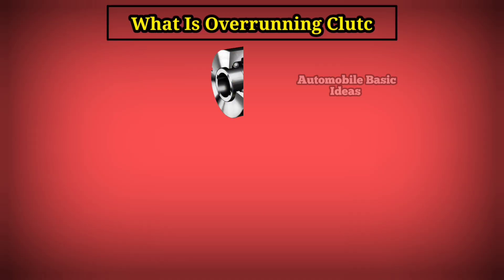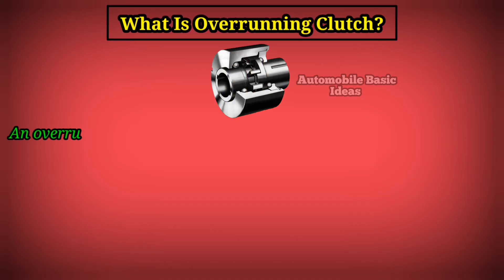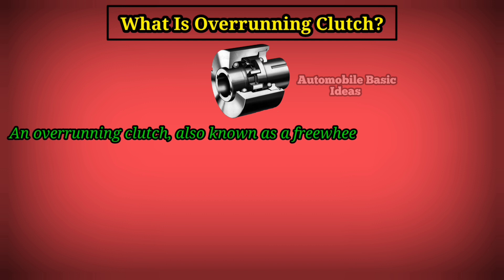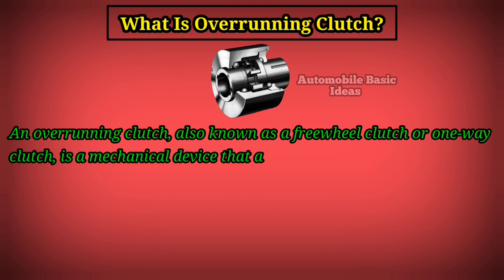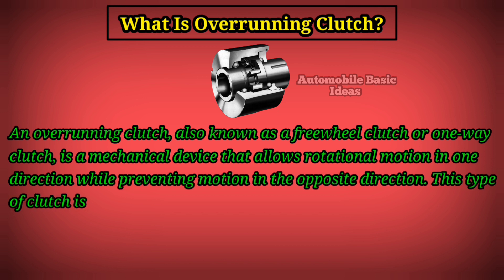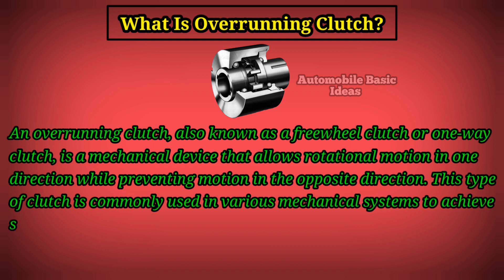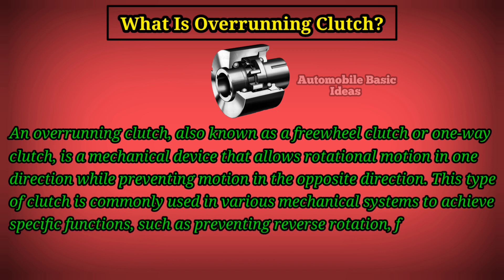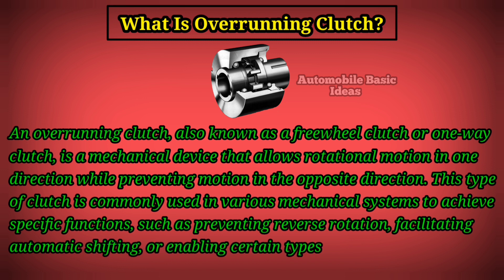What is an overrunning clutch? An overrunning clutch, also known as a freewheel clutch or one-way clutch, is a mechanical device that allows rotational motion in one direction while preventing motion in the opposite direction. This type of clutch is commonly used in various mechanical systems to achieve specific functions, such as preventing reverse rotation, facilitating automatic shifting, or enabling certain types of mechanical engagement and disengagement.